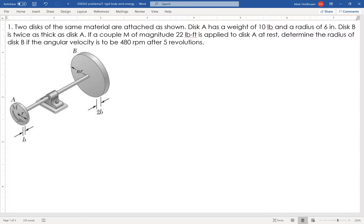I'm trying to find the velocity at a specific position number of revolutions. So velocity position means energy. My governing equation is going to be KE1 plus the work from 1 to 2 equals KE2, the final kinetic energy. This thing starts from rest, so KE1 goes to 0.